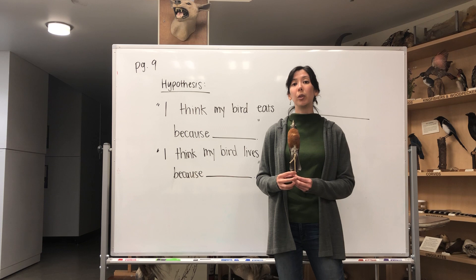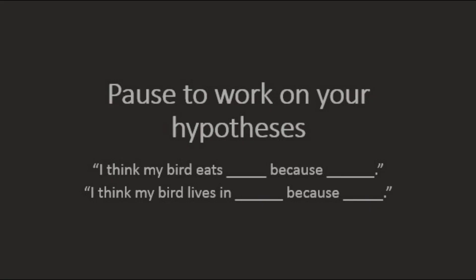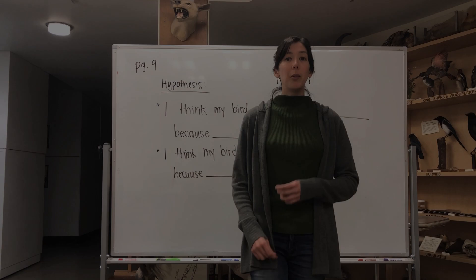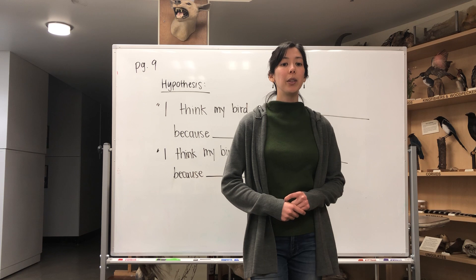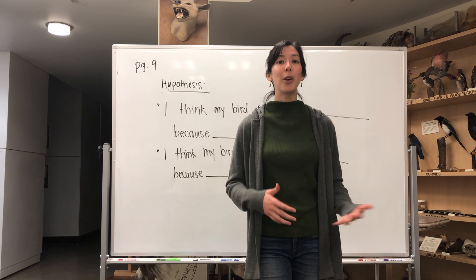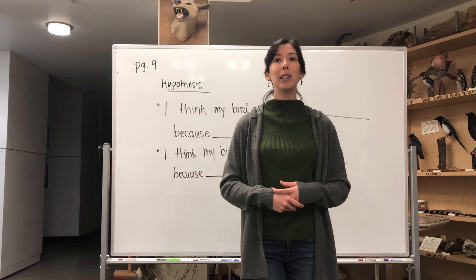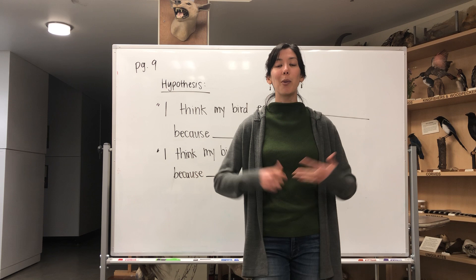Go ahead and pause the video, take about five minutes to finish your hypothesis, and use the beak and foot card if you need help. When you've finished page nine and written your hypothesis, turn to page ten. At the top of page ten there's a spot for a free drawing of your hypothesis: draw your bird hunting or foraging for food in the habitat where you think it lives, including plants, trees, other animals, and the food your bird eats. Take another five to ten minutes and add color to your drawing.